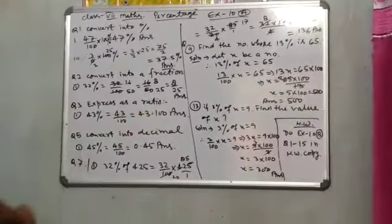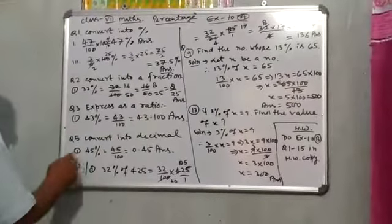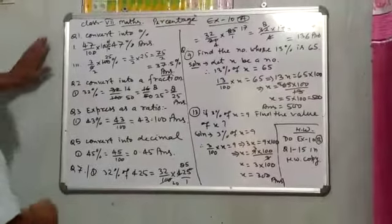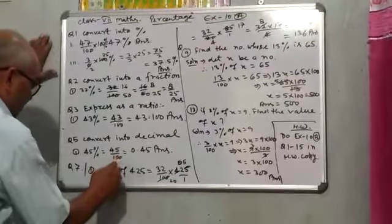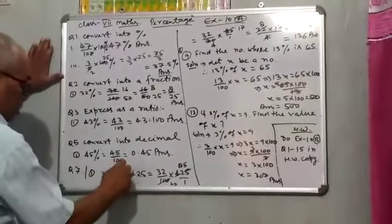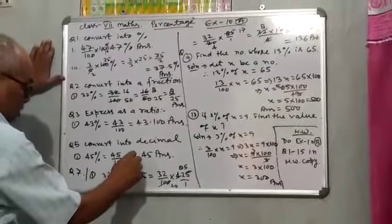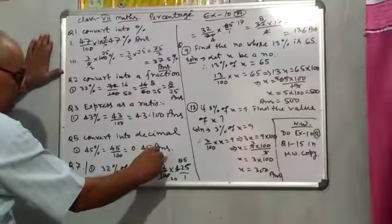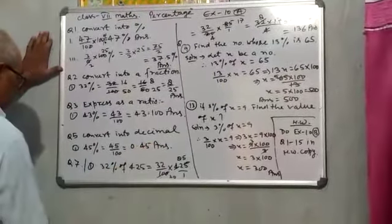Question number 5: Convert into a Decimal. First part: 45% will be equal to 45 upon 100, which will be equal to 0.45. That is the correct answer.